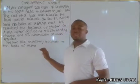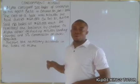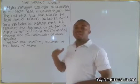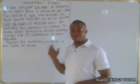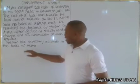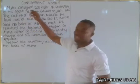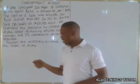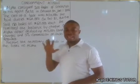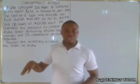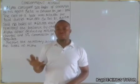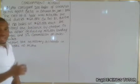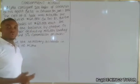On December 1st, Beta sold 180 bales at 60,000 each. He remitted the balance by cheque to Alpha after deducting 15,000 landing charges and 5% commission. We are required to prepare the necessary accounts in the books of Alpha. Now the first thing to identify is who is the consignor and who is the consignee and which book we are preparing. Alpha consigned the goods, so Alpha is the consignor and we are recording in his books.